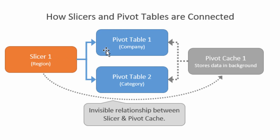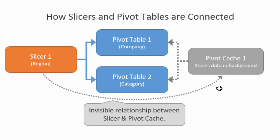Both pivot tables are connected to that cache, and the slicer is connected to both pivot tables — that's what we see when we go to the slicer connection menu. There's also an invisible connection between the slicer and the pivot cache in the background, and that slicer needs to be connected to just one single pivot cache. So the requirement for connecting a slicer to multiple pivot tables is that those pivot tables must share the same cache.